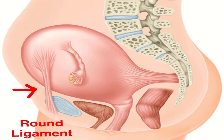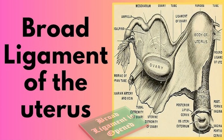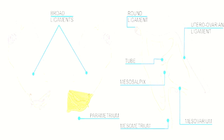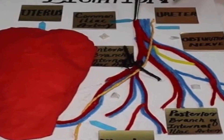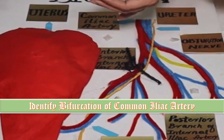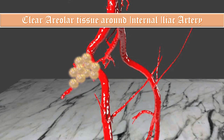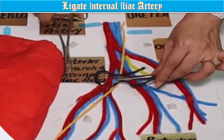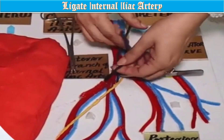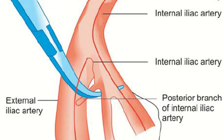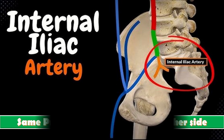For the internal iliac artery ligation procedure: ask the assistant to hold the uterus; clamp and divide the round ligament; open the broad ligament and retroperitoneal space; identify the common iliac artery and the ureter; identify the bifurcation of the common iliac artery; clear the areolar tissue around the internal iliac artery; palpate the femoral pulse; ligate the internal iliac artery. Elevate the artery with a Babcock clamp, pass forceps from lateral to medial. Carry out the same procedure on the other side.